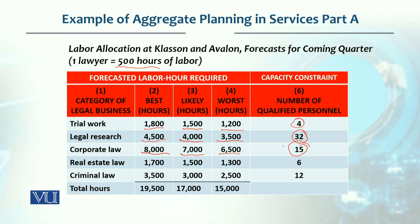For corporate law, the best case scenario is 8000 hours, likely is 7000, and worst case is 6500. There are 15 lawyers with expertise in corporate law. For real estate, the forecast is 1700 in the best case, 1500 in the likely case, and 1300 in the worst case scenario, with 6 experts available.